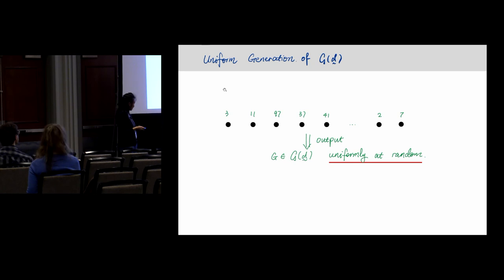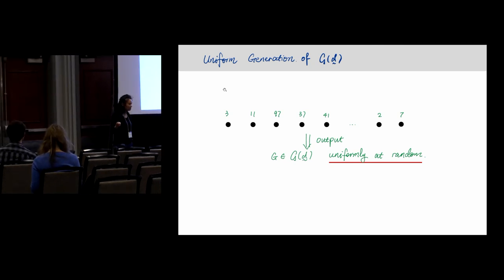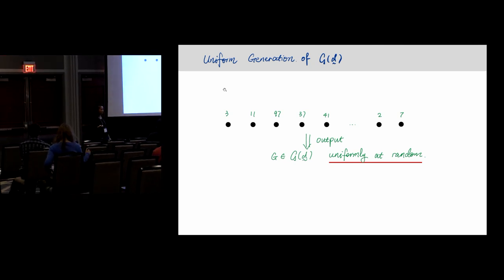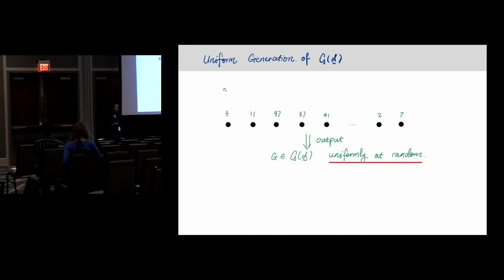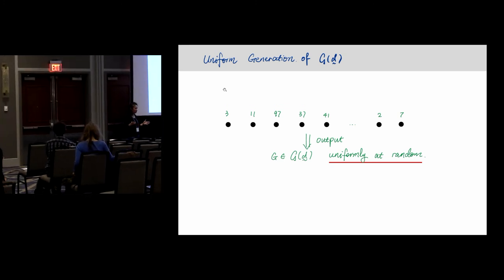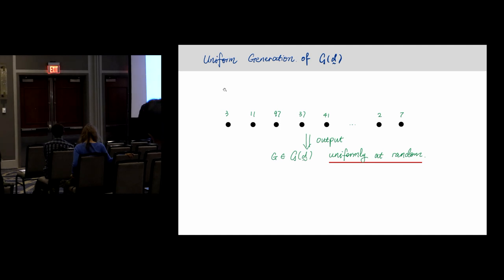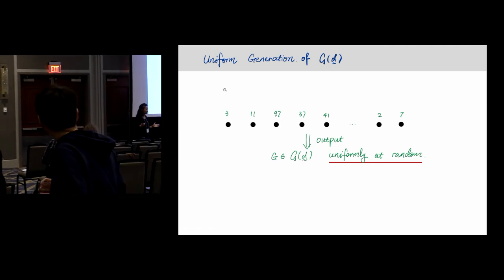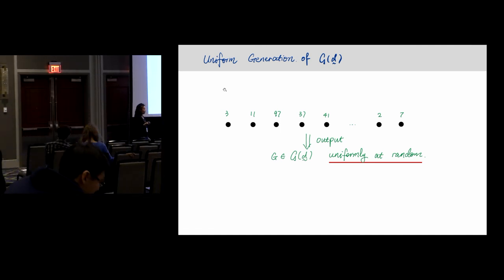Different from the previous talk, this talk I expect everything is very simple including the problem description. The problem is as follows: I'm giving you a set of vertices and I specify the degrees on every vertex, and I want you to output all the graphs, simple graphs with the specified degrees uniformly at random. That's the question.